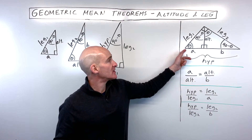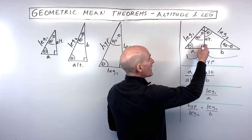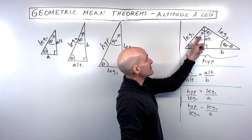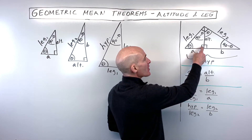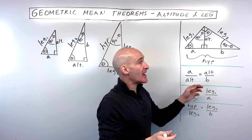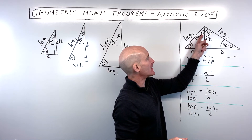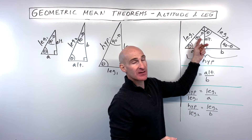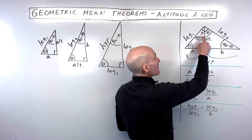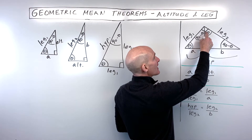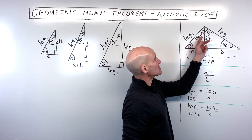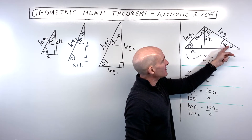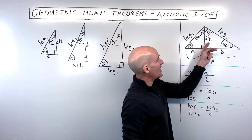Now let's understand where these formulas come from. Label the lower-left angle of the right triangle theta. The other acute angle must be 90 minus theta, since the two acute angles in a right triangle add up to 90. When you drop the altitude, the small triangle also has angle theta and the angles in the medium triangle also work out accordingly, so all three triangles are similar.